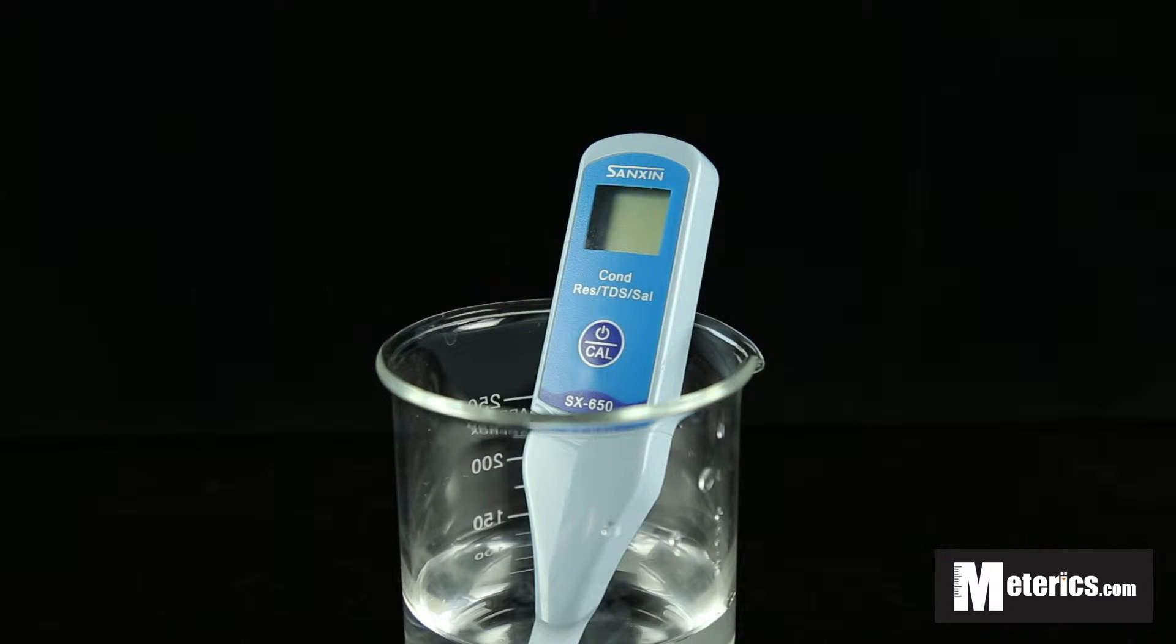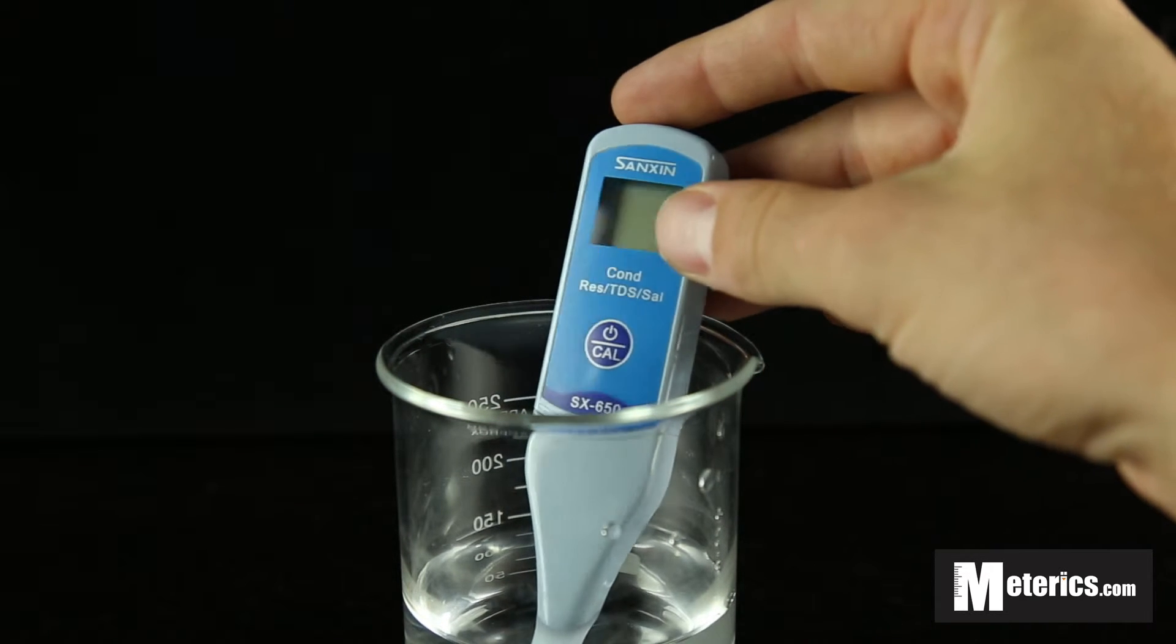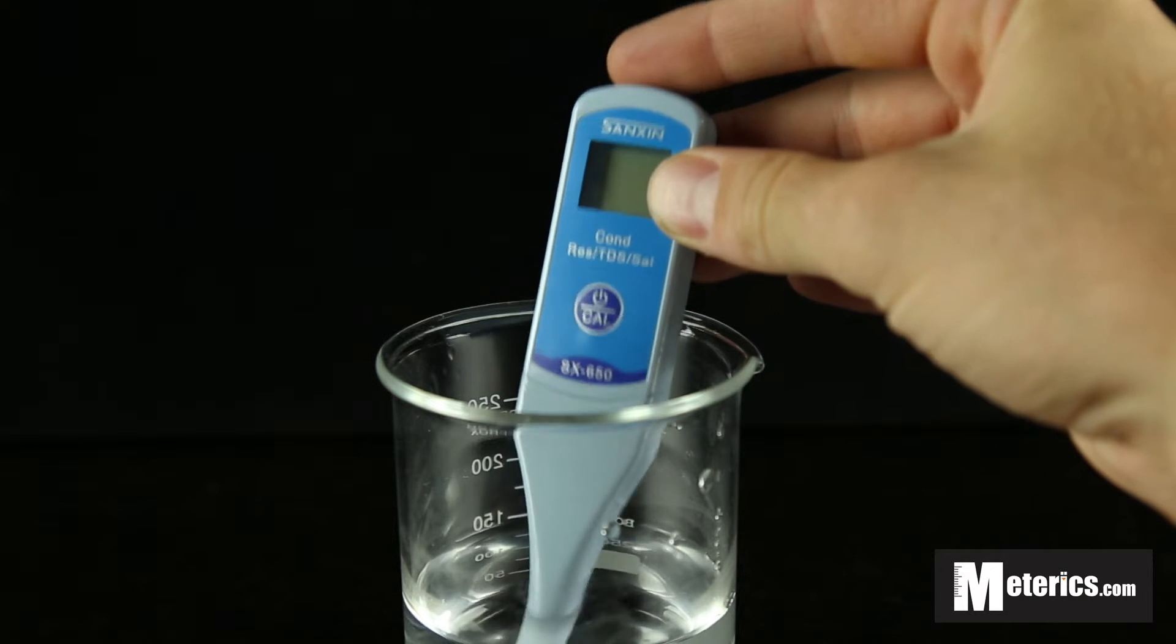Hi guys, here with Metrix and today we're looking at the Sanchin SX650 conductivity resistance TDS and salinity meter. This all-in-one meter is very compact and easy to operate.